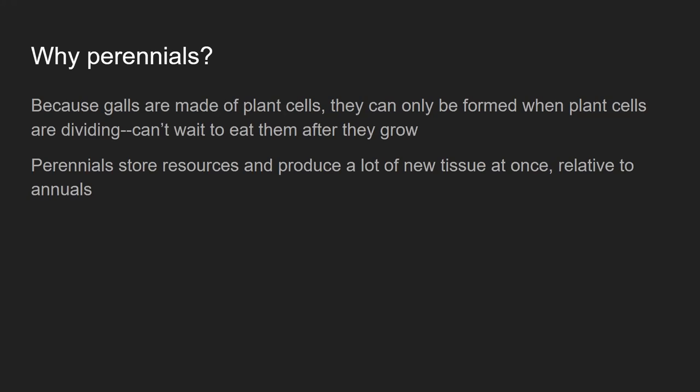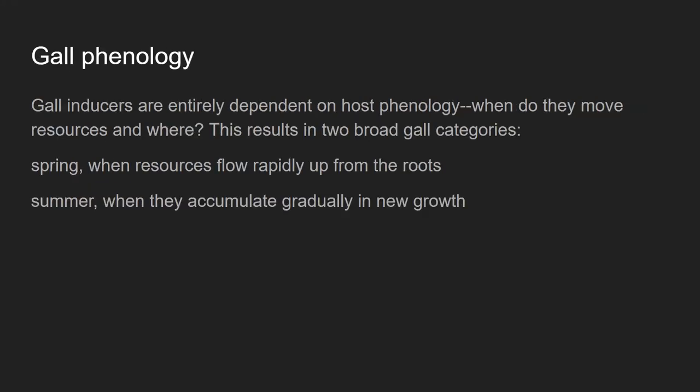Presumably that's why the vast majority of gall-inducers are found on perennial plants — because they're putting on this big flush of spring growth. Think of it in terms of the maple syrup season: this is the period when all that energy and nutrients are coming out of the roots, going up to the buds, going through that meristematic tissue, turning into new tissues. That's where you need to be in order to create a new organ.